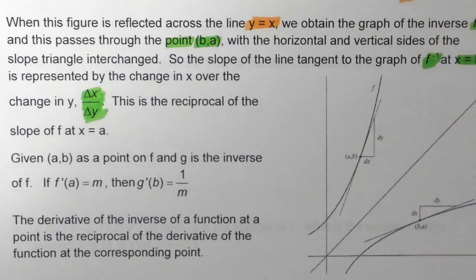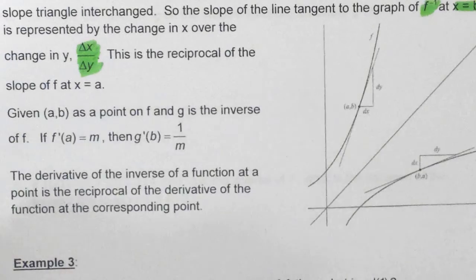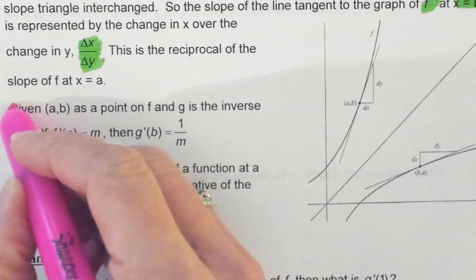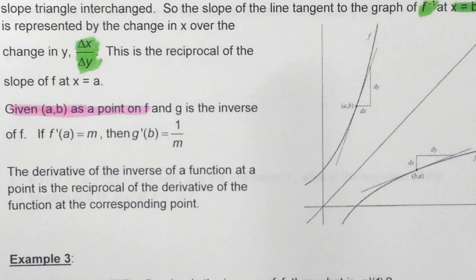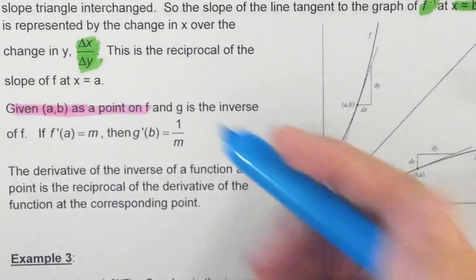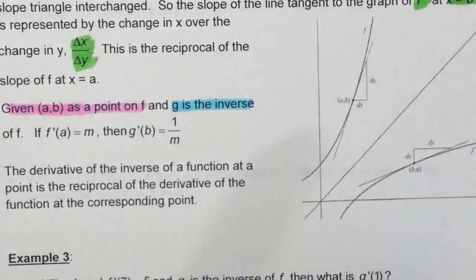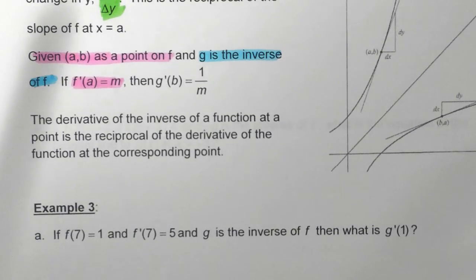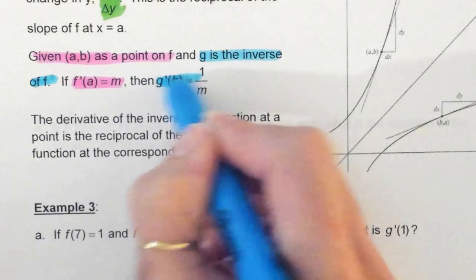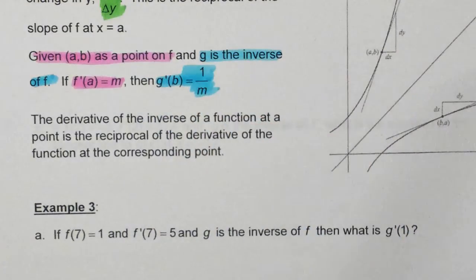This statement right here is really important. If you are given some point (a,b) as a point on f, then in the same breath, you are told that g is the inverse of f, and f prime of a is equal to some given value m, then g prime at b is the reciprocal.